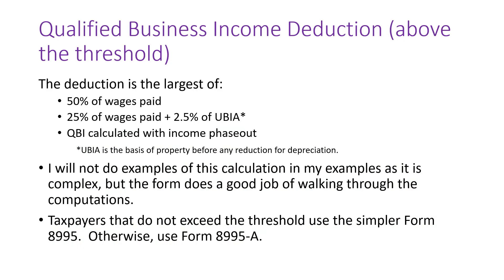UBIA is the basis of property before depreciation is taken out — usually the cost basis. If you are in the phase-out threshold range, you also have to calculate your QBI with that phase-out and take the largest of the three amounts. This is a complex calculation. Taxpayers that do not exceed the threshold use Form 8995; taxpayers that do exceed it use Form 8995A.